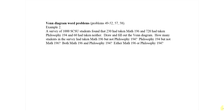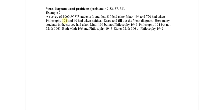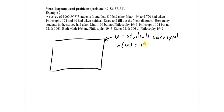Here's a Venn diagram word problem. 1,000 SESU students are surveyed; 230 had taken math 196, 720 had taken philosophy 194, and 60 had taken neither. Draw and fill out the Venn diagram, then answer questions. Always start a Venn diagram with your universal set. U is students surveyed, and there are 1,000.